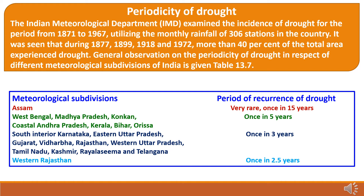Periodicity of drought. The Indian Meteorological Department examined the incidence of drought for the period from 1871 to 1967, utilizing the monthly rainfall of 306 stations in the country. It was seen that during 1877, 1899, 1918, and 1972, more than 40% of the total area experienced drought. General observations on the periodicity of drought in respect of different meteorological subdivisions of India show that in Assam, drought occurrence is very rare — once in 15 years. In West Bengal, Madhya Pradesh, Konkan, Coastal Andhra Pradesh, Kerala, Bihar, and Odisha, it is observed once in 5 years.